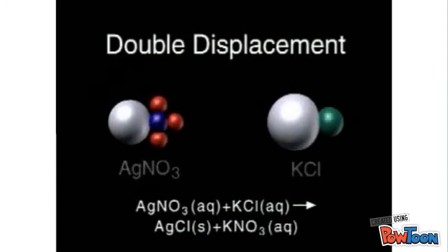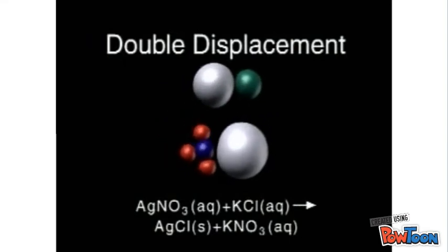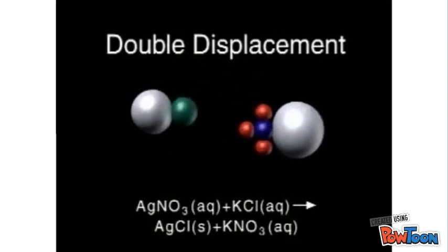A chemical example of this is silver nitrate plus potassium chloride yields silver chloride plus potassium nitrate. Basically they're just switching partners.